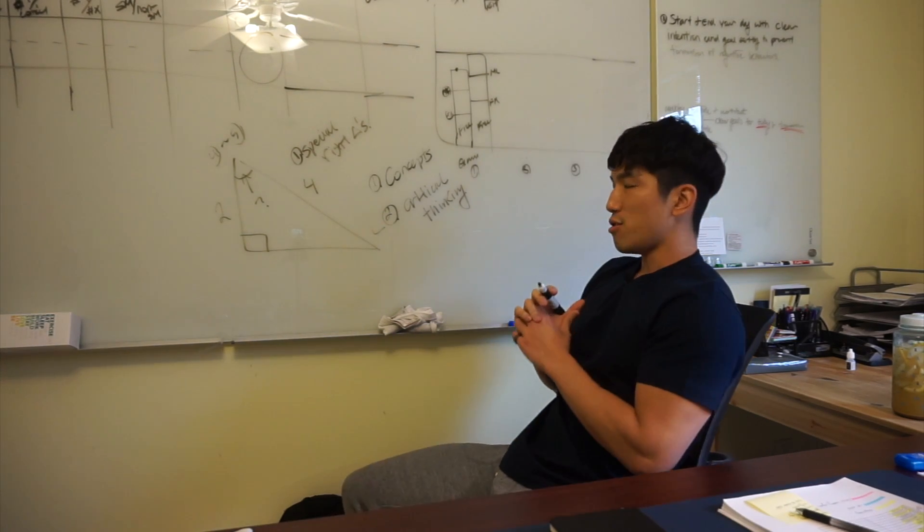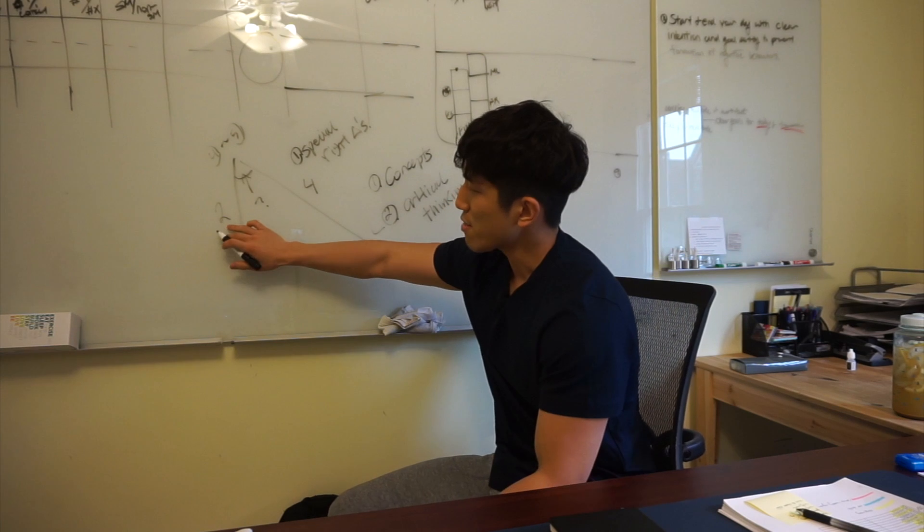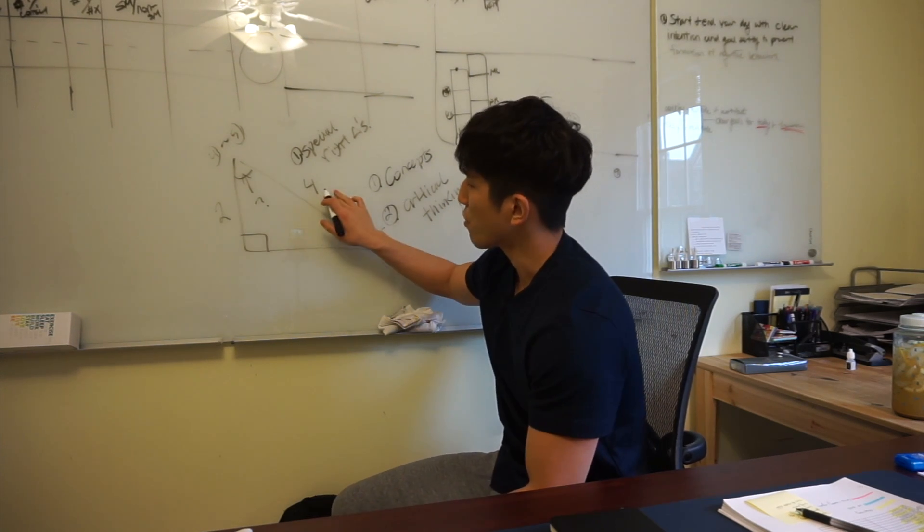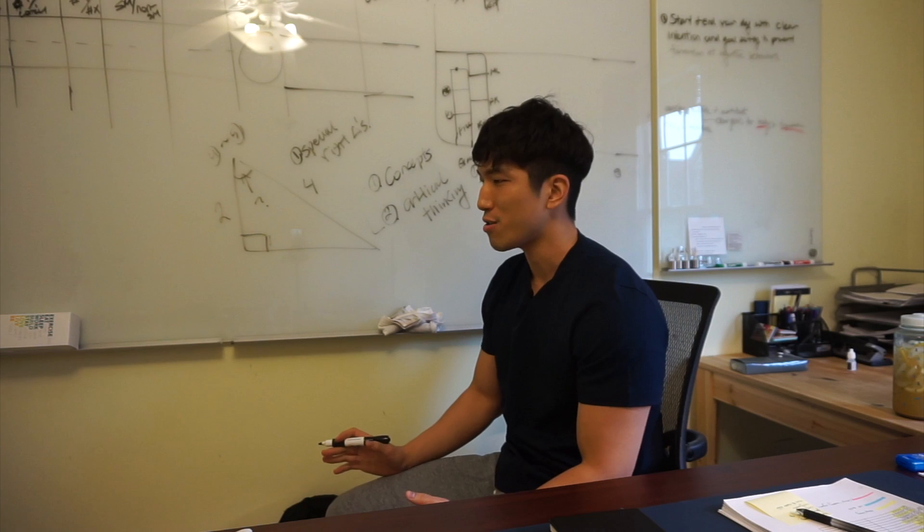So, let me explain to you how this question can be solved. Side length over here is 2, side length over here is 4, and that is a right triangle, right?